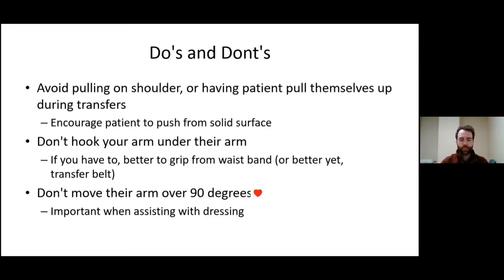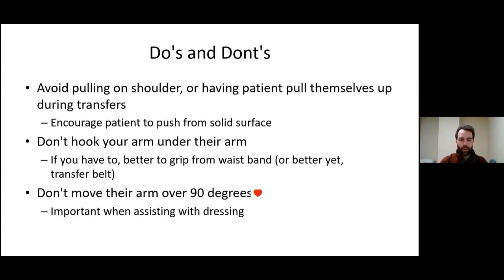A quick review of do's and don'ts: avoid pulling on the shoulder — instead encourage the patient to push from a solid surface, either the bed or the armrests of the chair. Try not to hook your arm under their arm; if you have to, it's much better to grip from a waistband or, better yet, a transfer belt — any patient who needs a transfer belt will have one. Don't move their arm over 90 degrees, whether forward or to the side, and this is especially important to keep in mind when assisting with dressing.